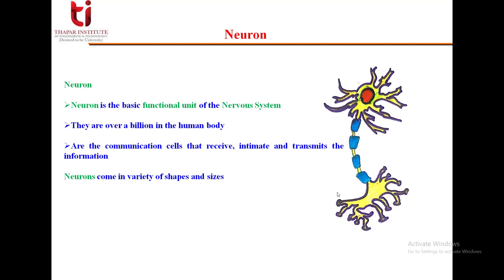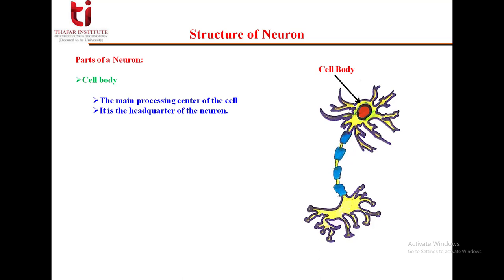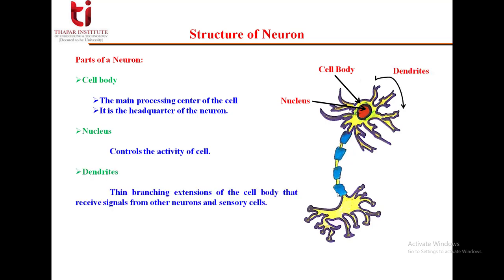Let's study the typical structure of the neuron. First is the cell body — you can see it shown in the diagram. It is the main processing center of the cell and is also known as the headquarters of the neuron. Next is the nucleus, which controls the activity of the cell. Then we have dendrites, which are the thin branching extensions of the cell body, as we can see in the figure, that receive signals from other neurons and sensory cells.